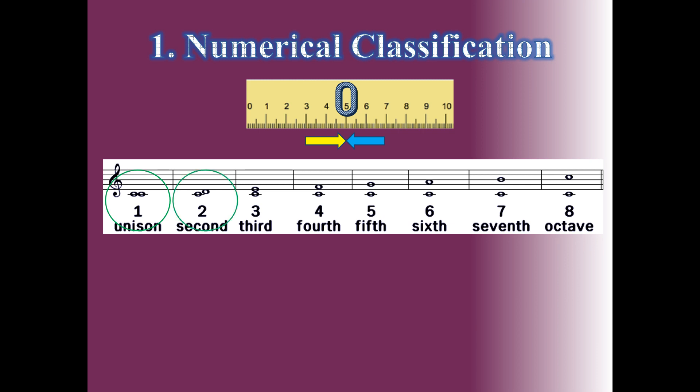From DO to RE, there are two tone names — DO and RE — so it is the second interval. From DO to MI, there are three tone names — DO, RE, and MI — so it is the third interval. From DO to FA, there are four tone names — DO, RE, MI, and FA — so it is the fourth interval.